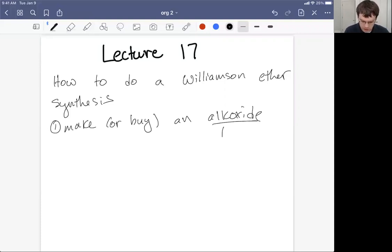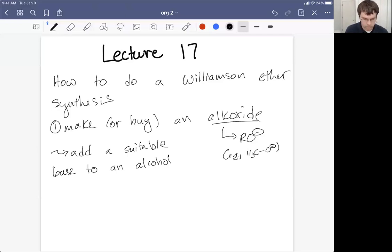To do that, let's remind ourselves an alkoxide looks like hydroxide, but it's got an R group instead of a hydrogen. So we have RO minus. A specific example, just one of many, is when the R group is a methyl group. What we do here is add a suitable base to an alcohol.